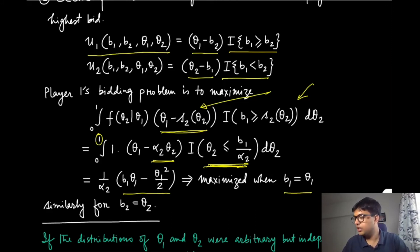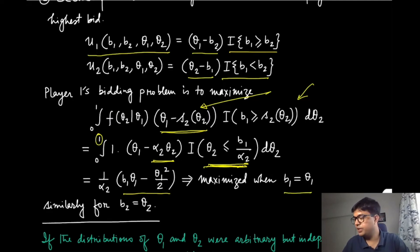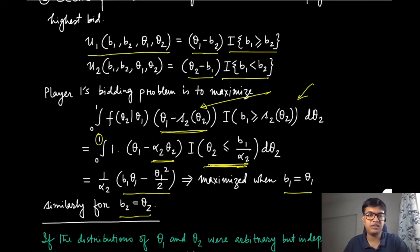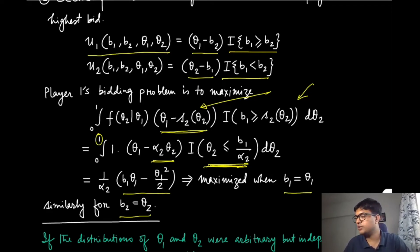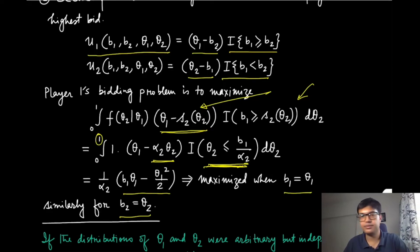Similarly, solving the bidding problem for player two gives b2 = theta2. So under the uniform common prior and independence assumption, bidding one's true type is the Bayesian equilibrium for both players in the second price auction.